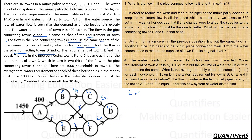5a equals 250, so a equals 50. If a is 50, then 2a is 100, 3a is 150, and the pipe connecting A-F and A-C is also 150 and 100 respectively.